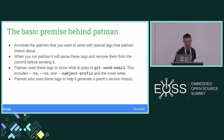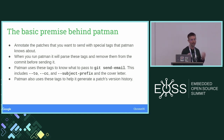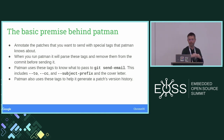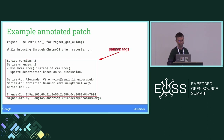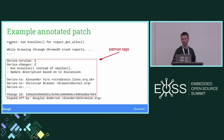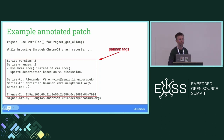The basic premise behind Patman is that you actually edit the patches themselves and put special annotation tags in the patches. When you use Patman to send the patches upstream, it uses those tags to get its metadata and then strips them out of the patch. It uses these extra tags to know what to send to git send-email, what to do for a subject prefix, and how to generate a version history.